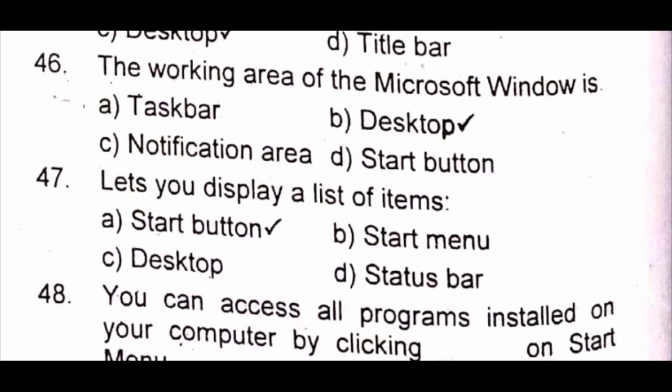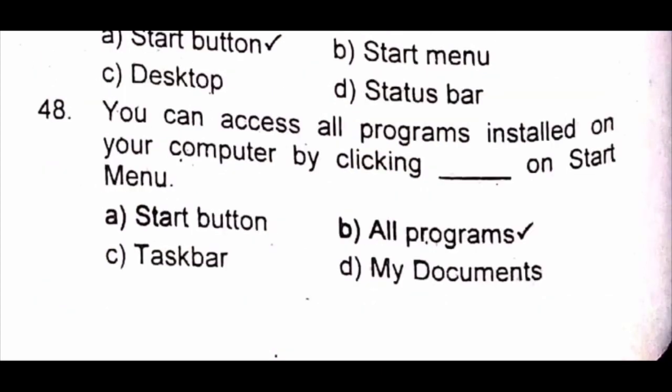Question 47: Dash lets you display a list of items. A) start button B) start menu C) desktop D) status bar. The answer is B) start button. Question 48: You can access all programs installed on your computer by clicking on A) start button B) all programs C) taskbar D) my documents. The answer is B) all programs.